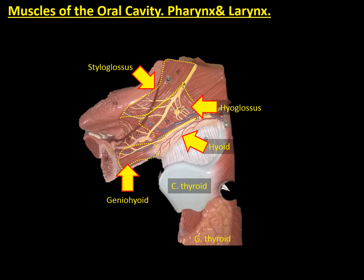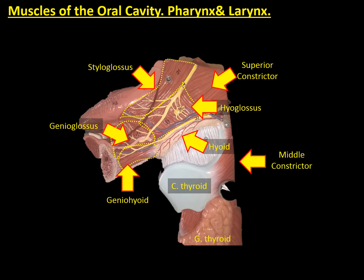Anterior to the body of the tongue, we are observing some of the fibres from the genioglossus muscle. This image is also showing fibres from the superior constrictor muscle, which are going to get linked to the muscles of the floor of the mouth to make a continuous structure between the oral cavity and the pharynx. We are also observing the middle constrictor muscle, which is going to be bound to the thyroid cartilage. And we are also observing the cricothyroid muscle, which is the muscle of the larynx, being bound between the cricoid and the thyroid cartilage.